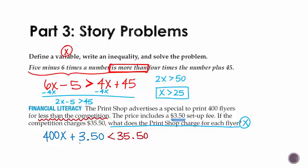Now we can solve this. If I subtract 3.50 from both sides, we end up with 400x. It has to be less than 32. And if you divide both sides by 32, or sorry, by 400, we do 32 divided by 400, we get 0.08. So less than 8 cents for each flyer.